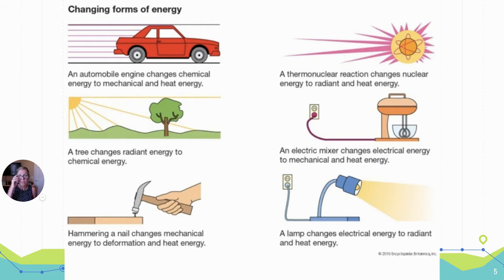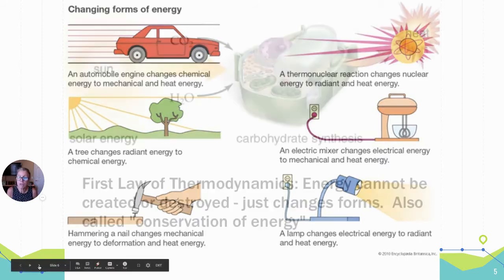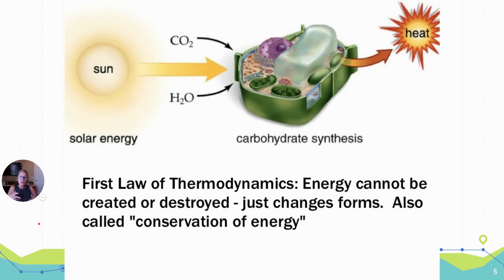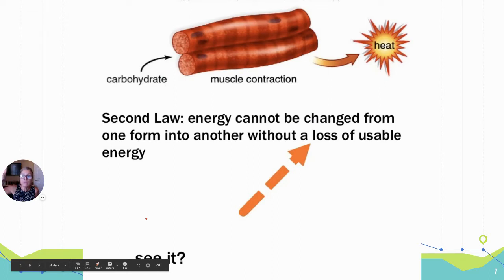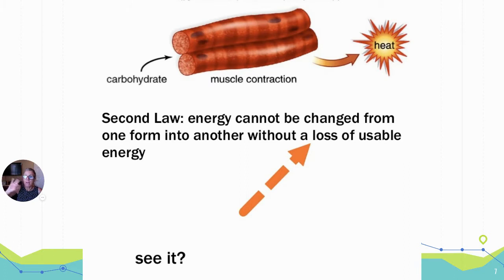We understand different kinds of energy. Now let's talk about the two laws of thermodynamics. The first law says energy cannot be created or destroyed — it just changes forms. There's no more energy than what we have in our universe. The second law says that every time we change those forms, you're going to lose some of that useful energy, generally as heat. Every time energy changes forms, entropy — which is disorganization — increases.